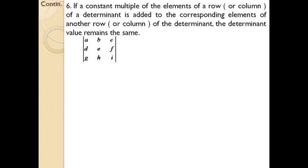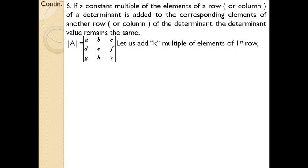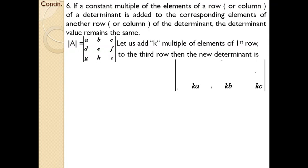For example, a determinant of order 3 is given: a, b, c, d, e, f, g, h, i — let it be determinant A. Let us add k times the elements of the first row — that is, k×a, k×b, k×c — to the third row. The new determinant will be a, b, c in the first row; d, e, f in the second row; and g+ka, h+kb, i+kc in the third row.